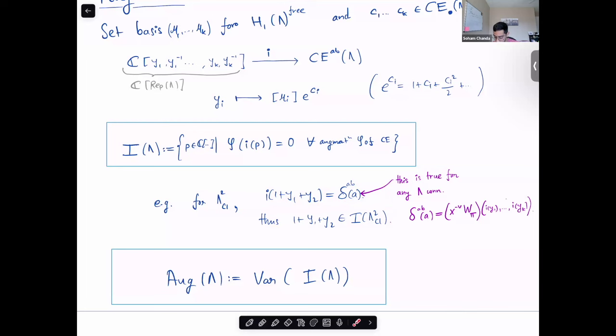And this phenomena is true in general for any lambda connected. In particular, we have a formula, which is important to show one of the main results: if you evaluate the boundary of a, where a is the smallest Reeb chord, you get that it is equal to the disk potential multiplied by some monomial applied to push forwards of these monomials y_i by this identification i. Finally, we define the augmentation variety as the variety defined by this ideal.